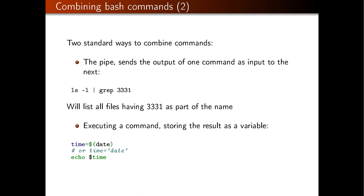Another way to combine commands is by storing the result of a program as a variable and passing it to the next command. For example, you can create a variable called 'time' using the syntax 'time=$(date)' — the dollar-parentheses syntax tells the shell to execute the 'date' command and store the result in the variable. The 'date' command prints out the current time and date, so now you can print out the variable 'time' and see the current time and date. An alternative syntax using backticks is equivalent to the dollar-parentheses form.